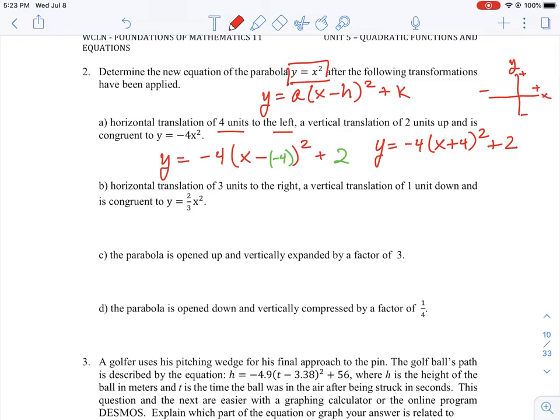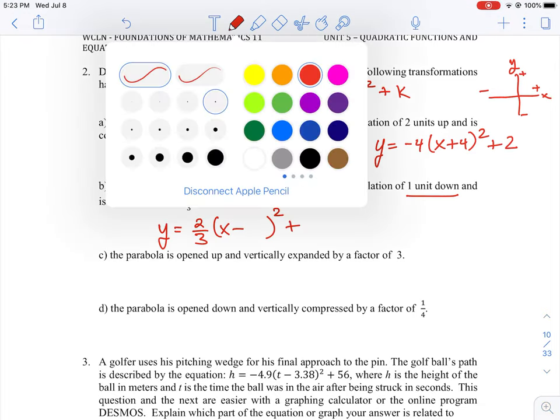So if we look at the next one here, it says a horizontal translation of three units to the right. So three units to the right means we're going in the positive x direction and a vertical translation of one unit down. That means we're going into the minus direction. And our base equation is 2 thirds x squared. So let's just write our equation out. 2 thirds and then we're going to go x minus, and I'm going to leave a blank there, squared plus, and then we'll leave a blank there.